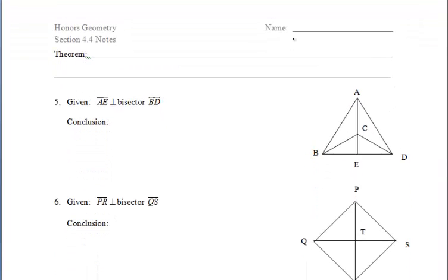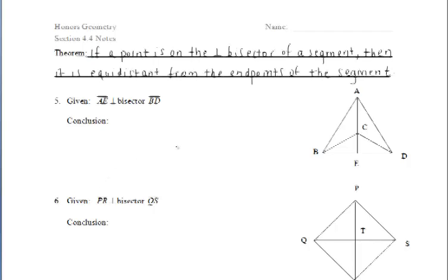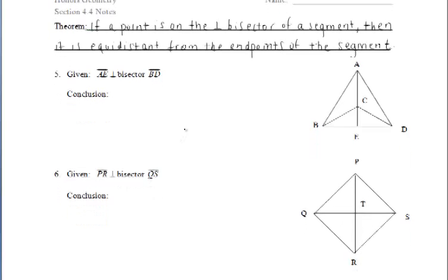This next theorem is going to take that idea in reverse. It states that if a point lies on the perpendicular bisector of a segment, then it is equidistant from the endpoints of the segment.